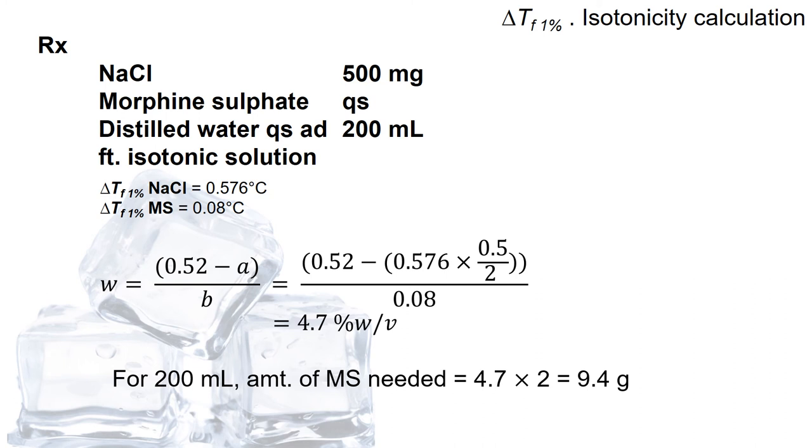For 200 mL, the amount of morphine sulfate needed is 2 times the value, which is 9.4 grams.